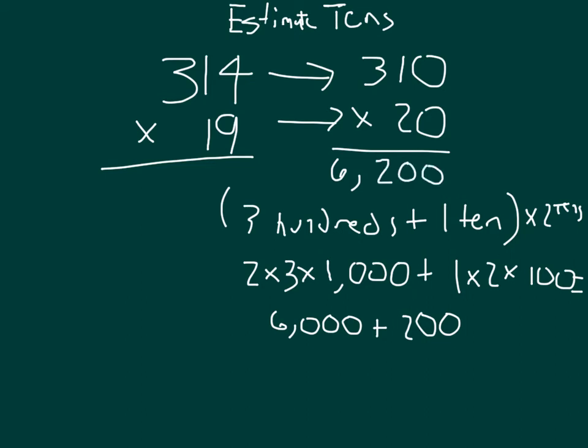Using the standard algorithm, that would be much the same way, where we would place a 0, multiply 2 times 0, which is 0, 2 times 1, which is 2, and 2 times 3, which is 6. We have that 6,200, our estimated product for the exact answer, 314 times 19. The exact answer is 5,966. And as you can see, our estimate is higher than the actual product.